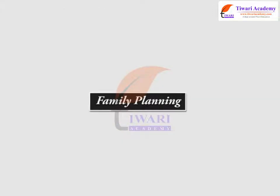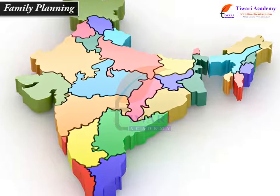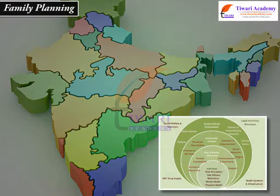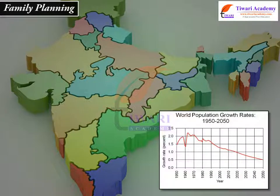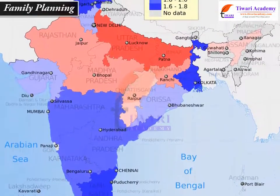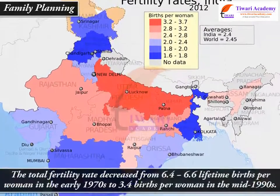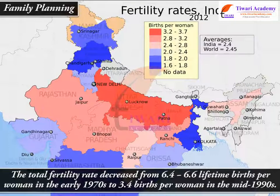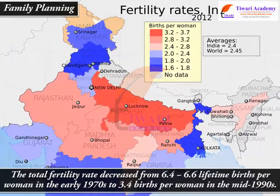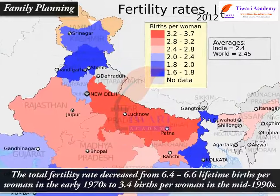Family Planning. More than 45 years ago, India became the first country in the developing world to initiate a state-sponsored family planning program with the goal of lowering fertility and slowing the population growth rate. Since the program's inception, fertility levels have declined throughout the country at varying paces in different regions. Overall, the total fertility rate decreased from 6.4 to 6.6 lifetime births per woman in the early 1970s to 3.4 births per woman in the mid-1990s.